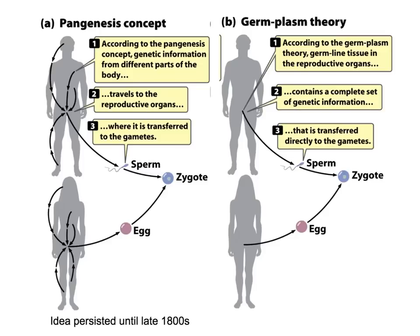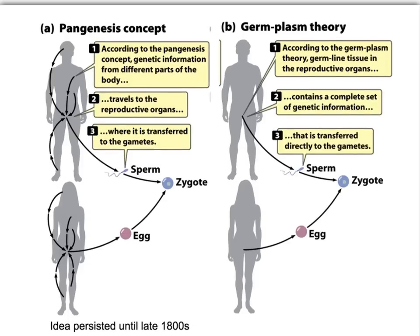Recall we talked briefly about the pangenesis concept versus the germplasm theory in the first lecture of class. The pangenesis concept was an early idea of reproduction in which it was thought that at the time of conception or reproduction, information was passed from all over an individual's body to the gametes, and that information was then passed on to the zygote that was produced.